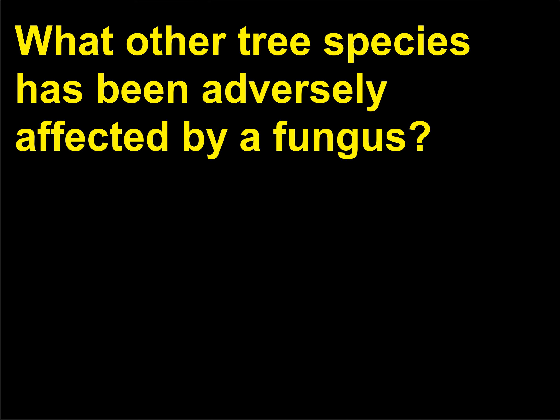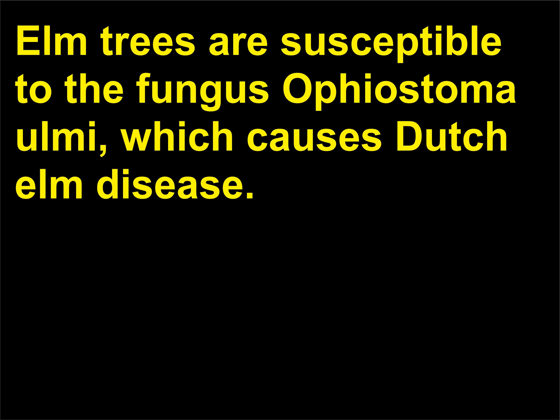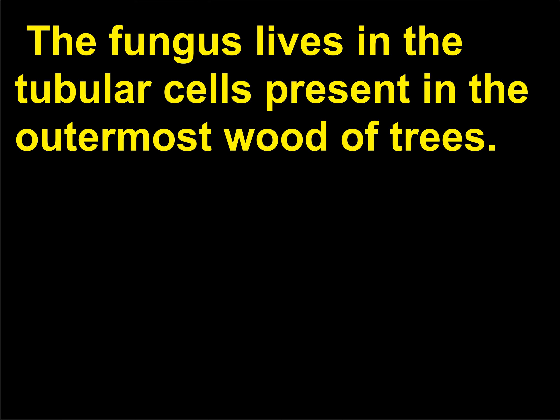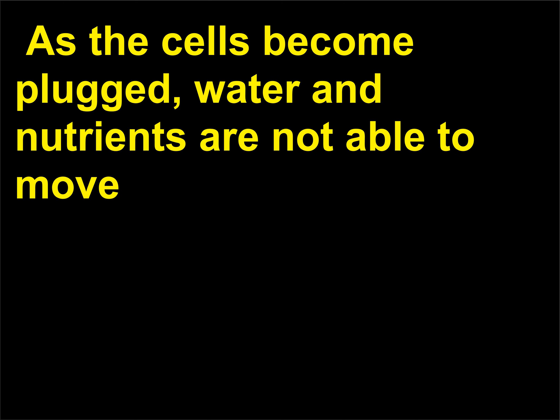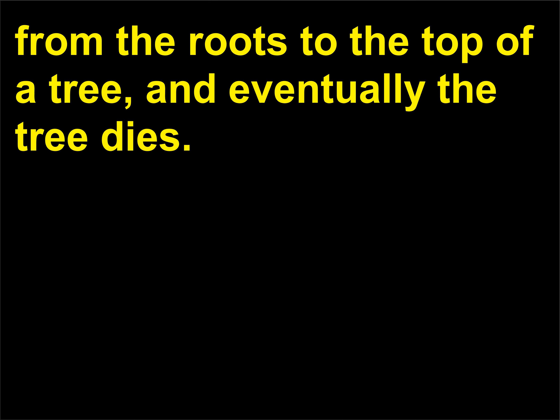What other tree species has been adversely affected by a fungus? Elm trees are susceptible to the fungus Ophiostoma ulmi, which causes Dutch elm disease. The fungus lives in the tubular cells present in the outermost wood of trees. As the cells become plugged, water and nutrients are not able to move from the roots to the top of a tree, and eventually the tree dies.